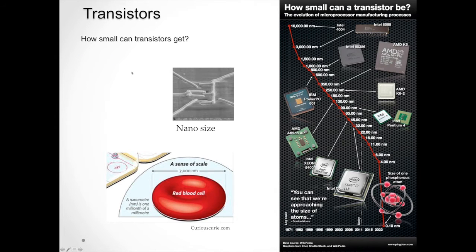So, how small can transistors get? It's down to the very nano size. Obviously, you can't see this with your eye, and this has to be using a highly powerful microscope of some sort. But, looking at the blood cell, you're looking at the sense of scale, you get 7000 nanometers, and a nanometer is one millionth of a millimeter. So, transistors are extremely, extremely small.